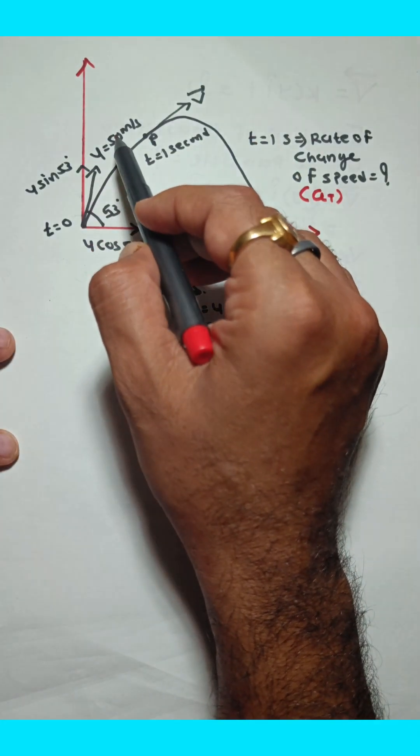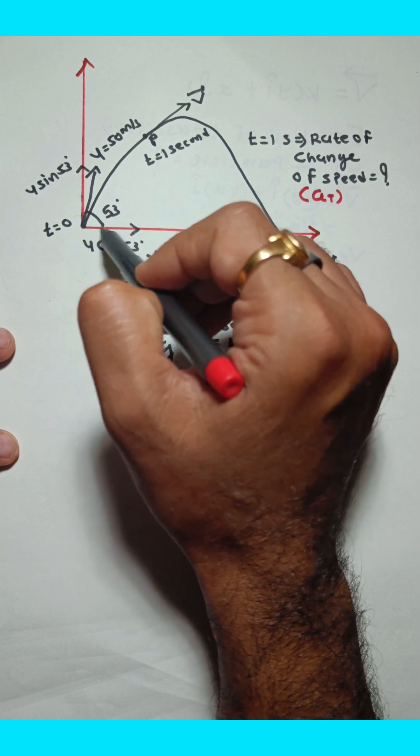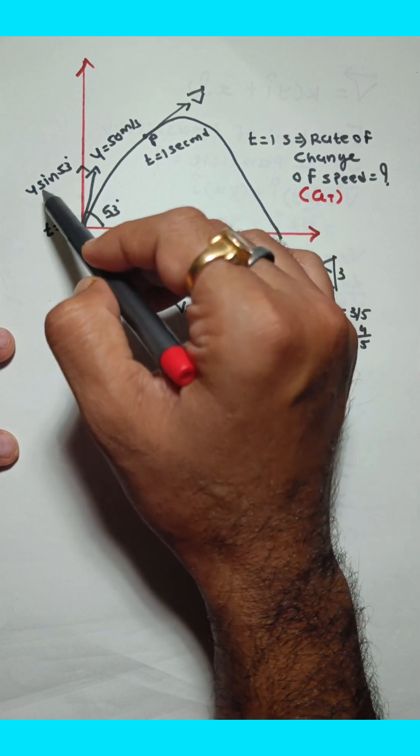In projectile motion, the initial speed of the projectile is 50 m per second. The angle of projection is 53 degrees. The two components of velocity are u cos 53 and u sin 53.